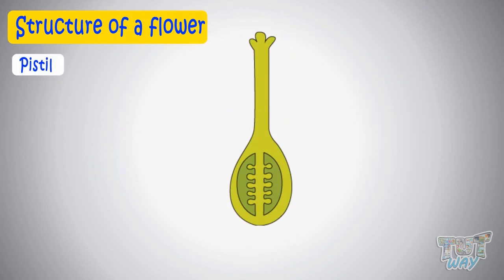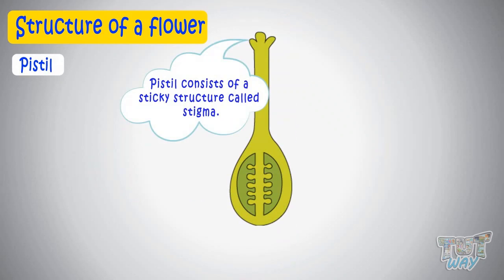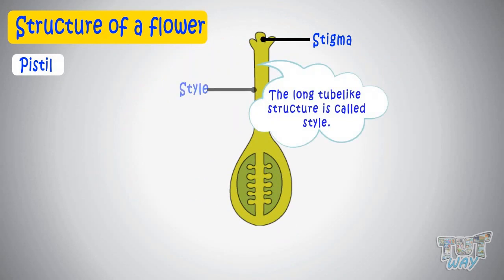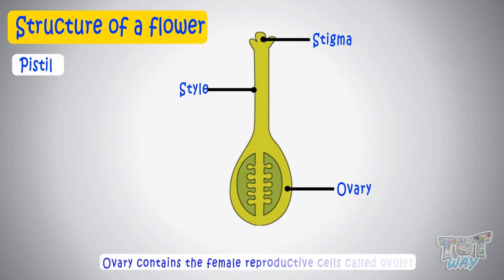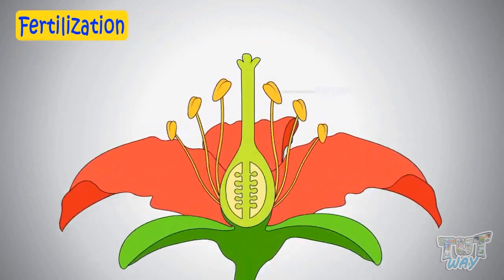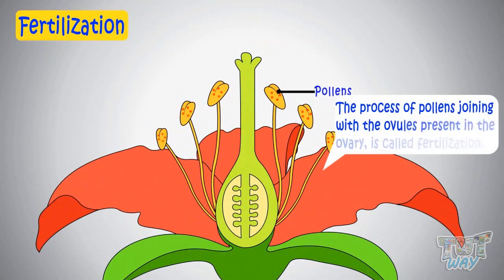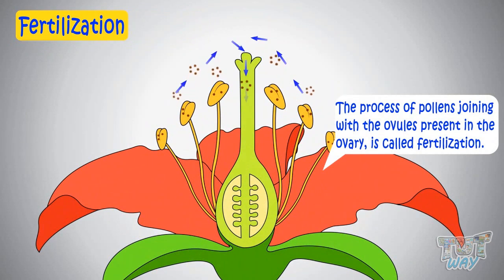Pistil consists of a sticky structure called stigma, attached to a long tube-like structure called style. The style ends in a swollen part called ovary, and this ovary contains the female reproductive cells called ovules. When pollens from the anther of the stamen join with the ovules present in the ovary, we call it fertilization.